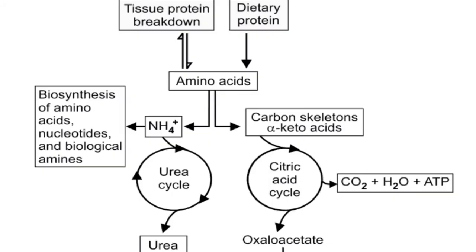In this picture you can see that amino acids are obtained from two sources: one is dietary proteins and the other is tissue proteins. Whatever the source, when an amino acid enters into a cell, during its catabolism the first step is that the alpha amino group is removed as ammonia, and the remaining carbon skeleton is used as a precursor for glucose, fats, or both.